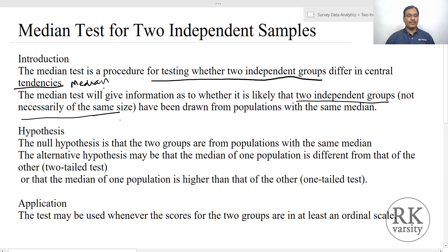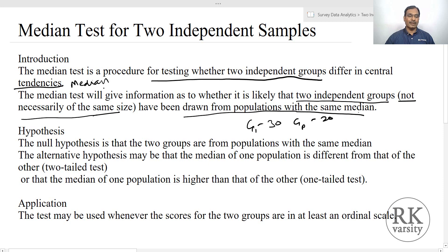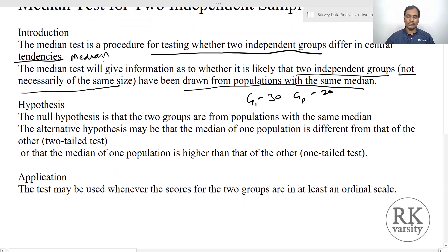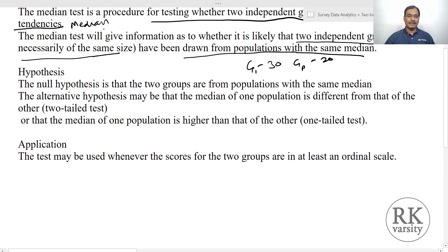For example, group one may have 30 respondents and group two may have 20 respondents — that is not a criterion here. The test checks whether the groups are drawn from the same population with the same median value. The null hypothesis is that the two groups come from a population with the same median.